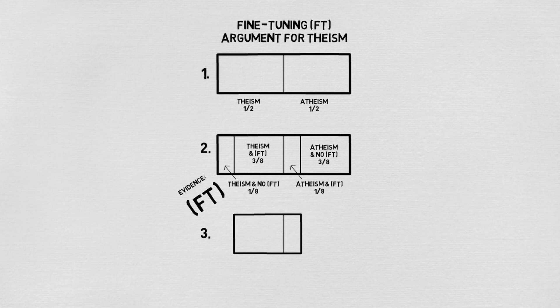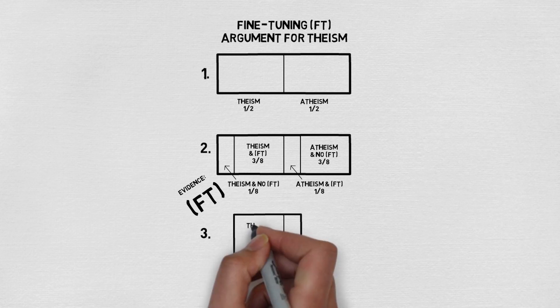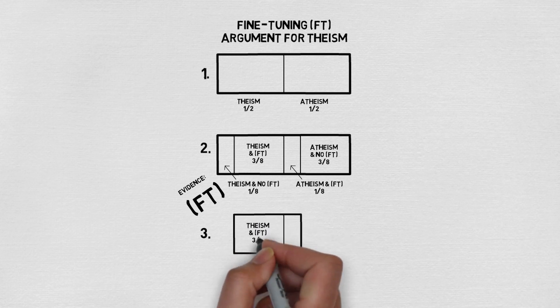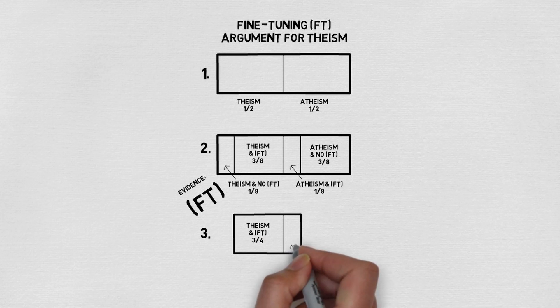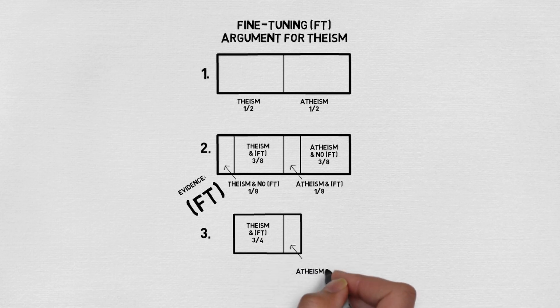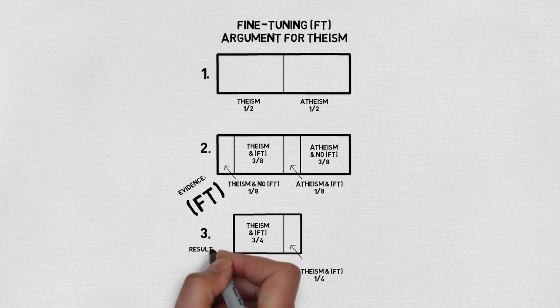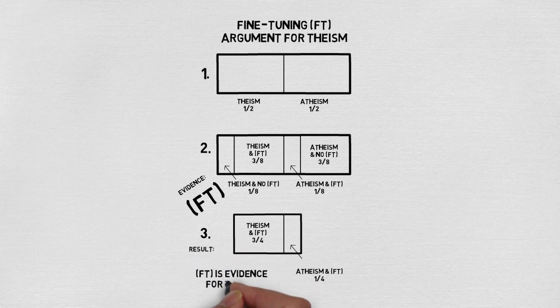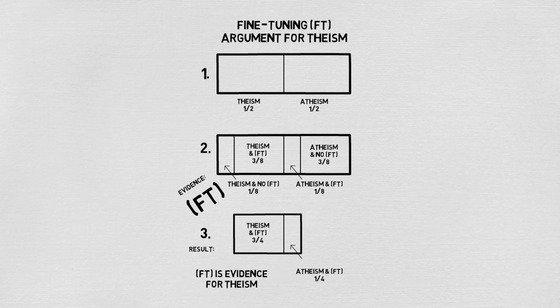So the final probability of theism and fine tuning is three quarters, and the probability of atheism and fine tuning is a quarter. The overall result is that fine tuning is evidence for theism as it raised the probability of theism and lowered the probability of atheism. Now before I explain how the bar relates to Bayes' theorem it will be helpful to introduce some jargon.